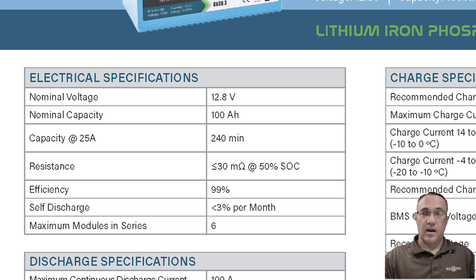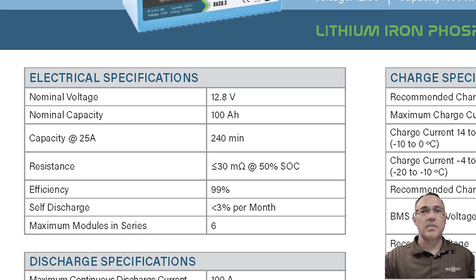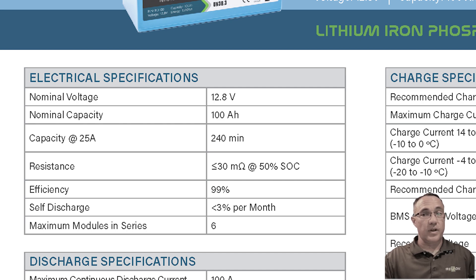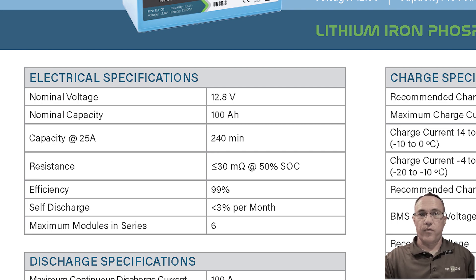10 amps, 10 hours, and so on. Capacity at 25 amps — like nominal capacity, the capacity at 25 amps, also known as reserve capacity, is the amount in minutes the battery can operate at 25 amps. For the RB100, we arrive at 240 minutes by dividing the capacity by the load and multiplying by 60: 100 amp hours divided by 25 amps equals 4 hours, times 60 minutes equals 240 minutes.